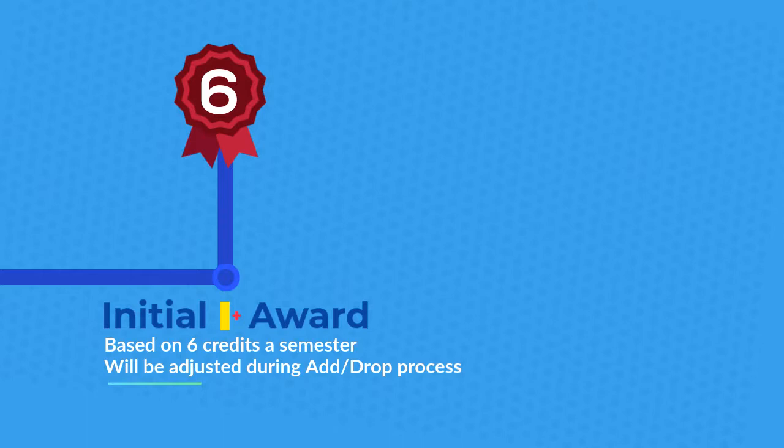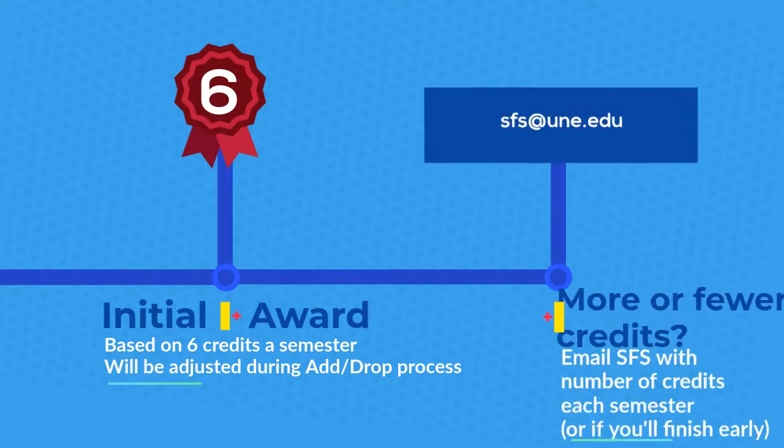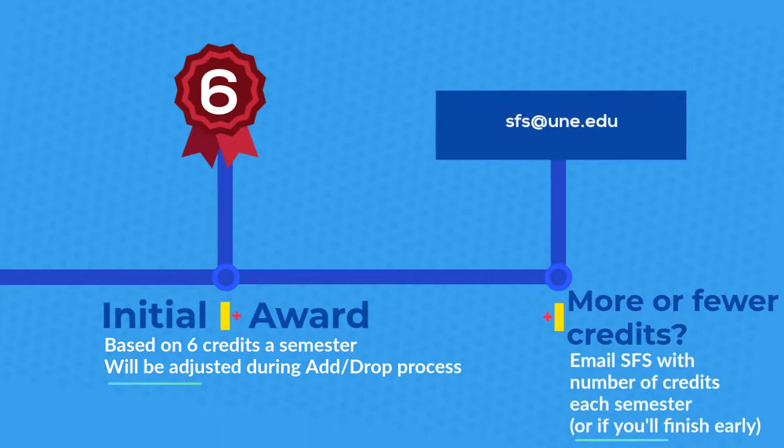Your initial award will be based on six credits each semester. We will make the necessary adjustments right after add/drop. If you want to notify us that your enrollment will be different, please send us an email telling us the number of credits you'll be taking each semester. Also, let us know if you plan to graduate before the end of the year.